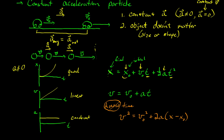Essentially this is our model for constant acceleration. We can get the same information from graphs or equations — it's just a matter of which is most beneficial. We should be able to look at a graph and describe the motion, or look at an equation and describe the motion. When we see a scenario we'll sketch all of these and then start answering questions. This is the constant acceleration model when acceleration is not equal to zero.